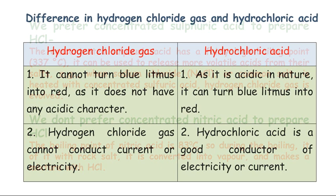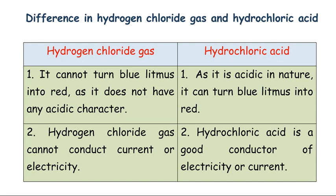Hydrogen chloride gas cannot turn blue litmus red because it does not show acidic nature, but hydrochloric acid is a very strong acid and can easily turn blue litmus red. Hydrogen chloride gas cannot conduct electricity because only a covalent bond is present, whereas hydrochloric acid is a very good conductor of electricity.